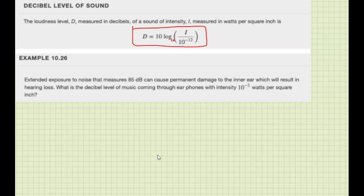What is the decibel level of music coming through earphones with intensity of 10 to the minus 2 watts per square inch? Okay, so here we're given the intensity is 10 to the minus 2, so that's the I.